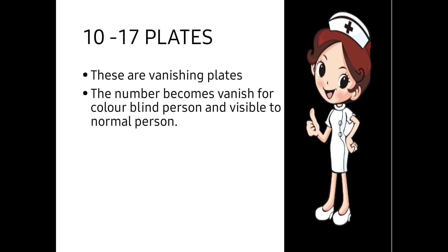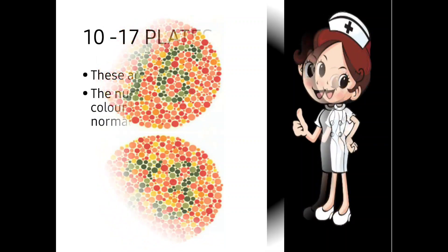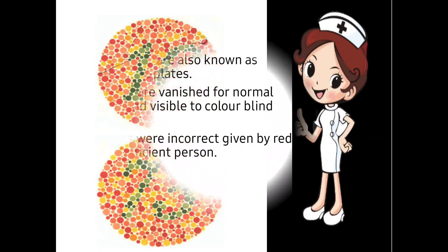Plates 10 to 17 are also known as vanishing plates. The number becomes vanished for the color blind person — if the person is color blind, they will not be able to see the numbers. Normal persons can see the numbers, but the numbers will get vanished to the color blind person.